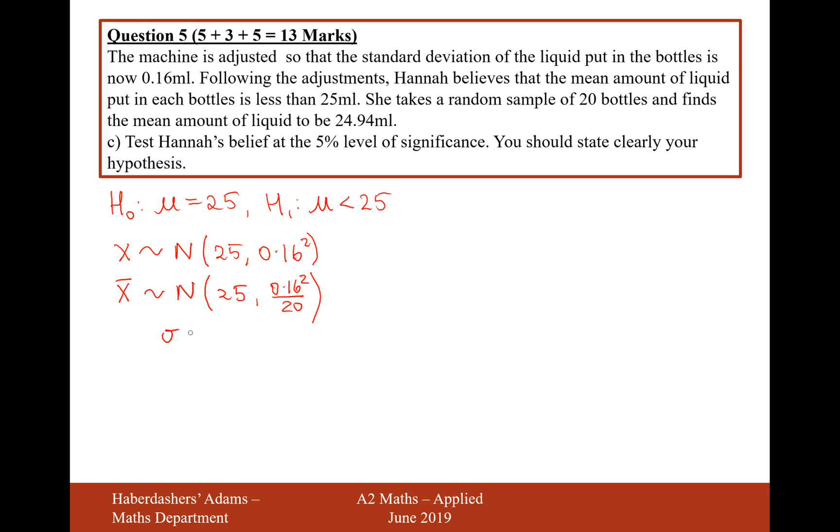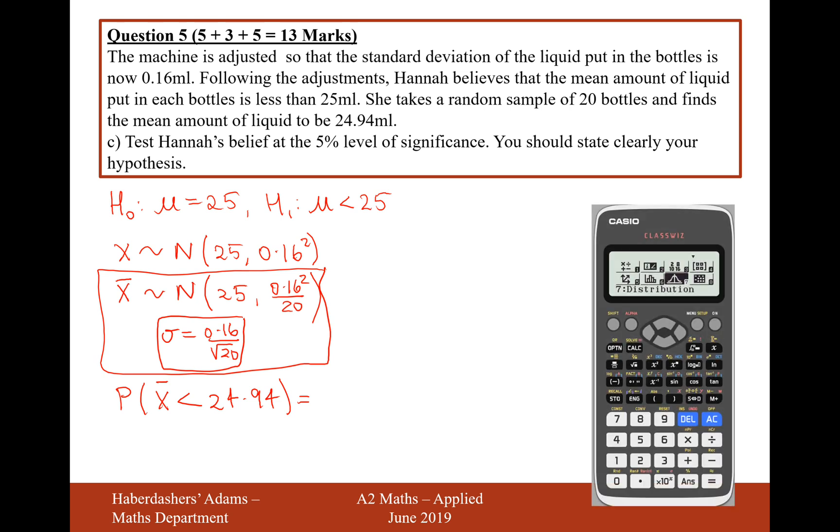So it's now the variance of 0.16 squared over 20 for the sample normal distribution. So therefore, the standard deviation is going to be 0.16 over the square root of 20. That's really important for our hypothesis test question like this, where you're taking a sample and then doing some calculated statistics on it. Now, what we want to work out is the probability of x being less than 24.94. So if we were to take these 20 bottles, what would be the probability of getting a sample mean of 24.94 when taking a mean of 20 bottles?